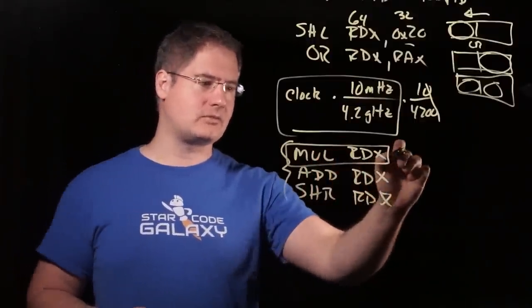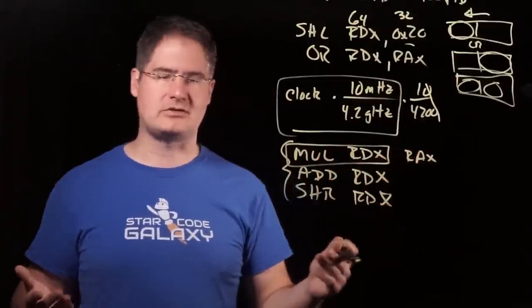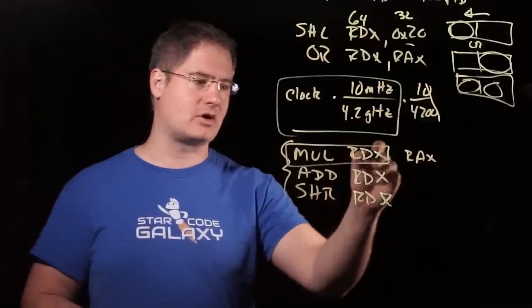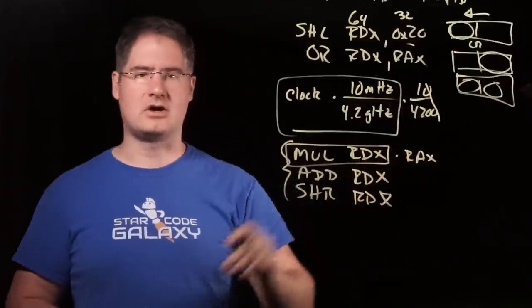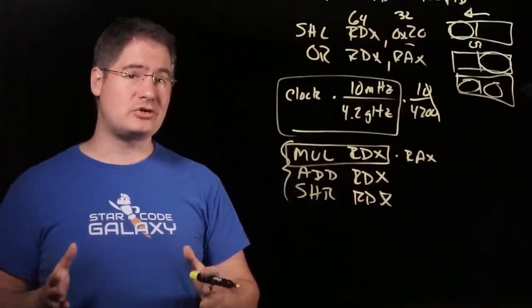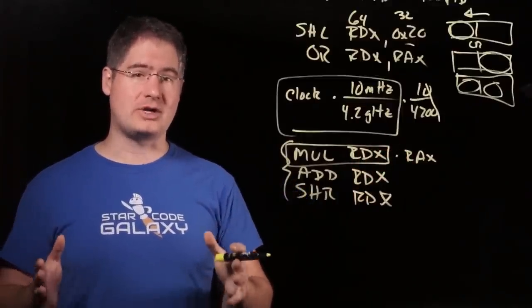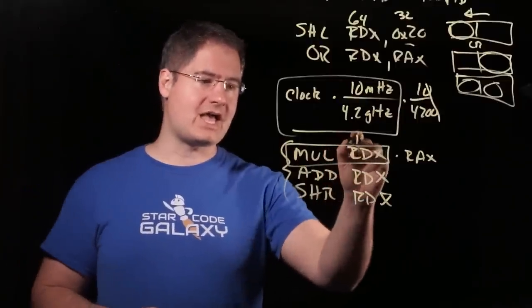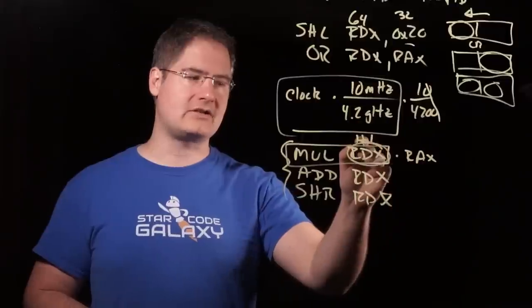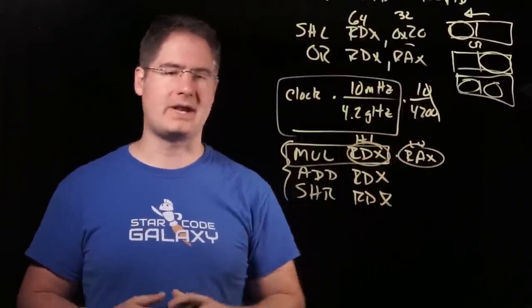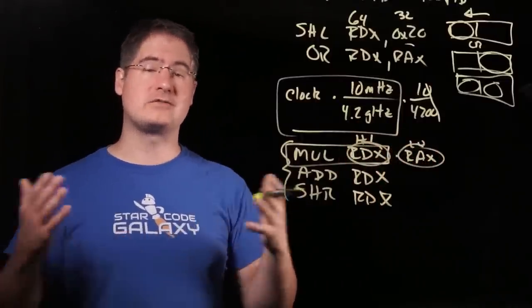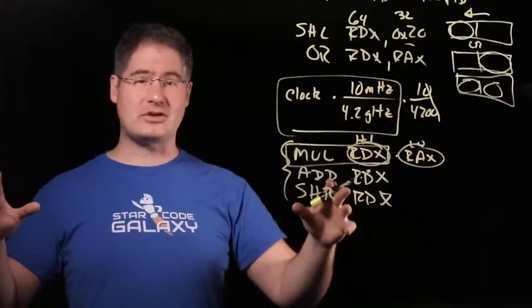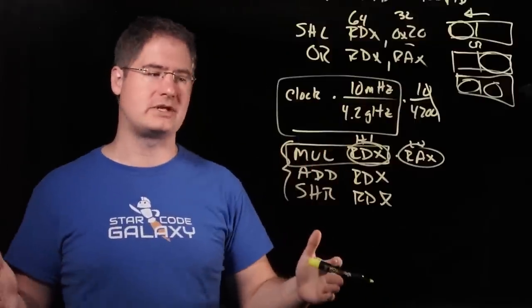What this means is that this will multiply by the implicit other register, which is RAX. This will do RDX times RAX, and it will produce the full 128-bit result. The high result will go into RDX, and the low result will go back into RAX. It overwrites both of those things with the full result. So, we're doing 64 times 64 and producing the full 128.